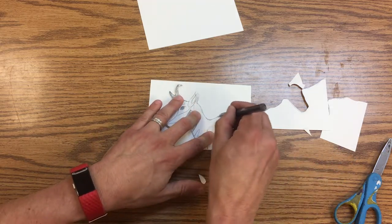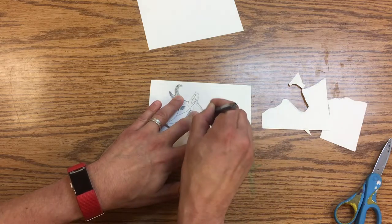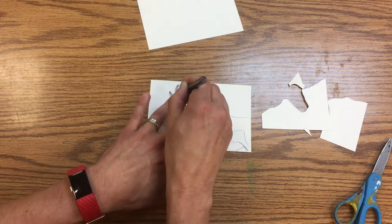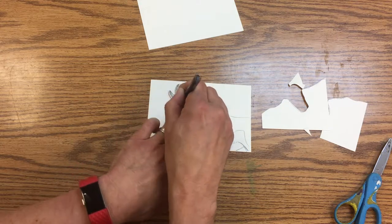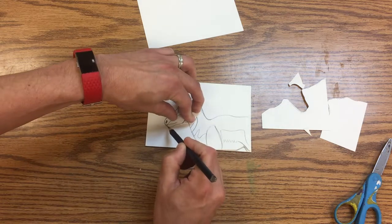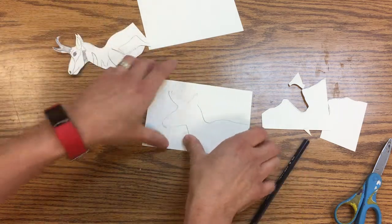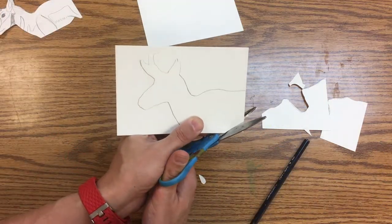And then I have to cut again, so I'm going to set the master aside and now I've just got the silhouette.